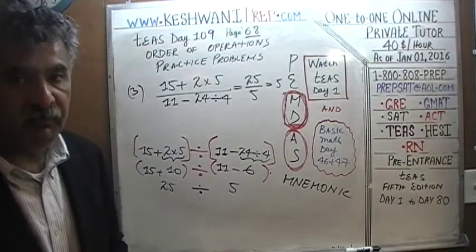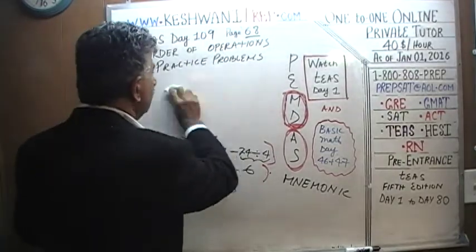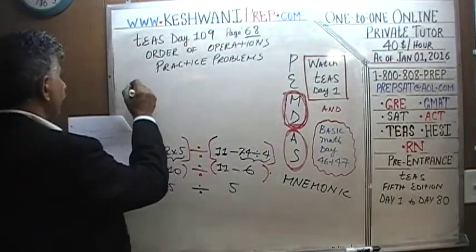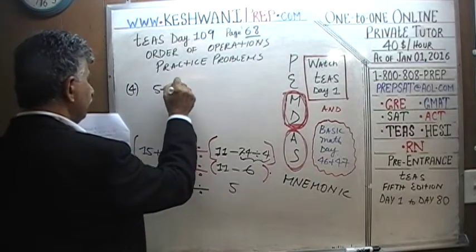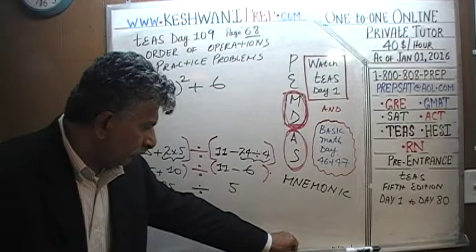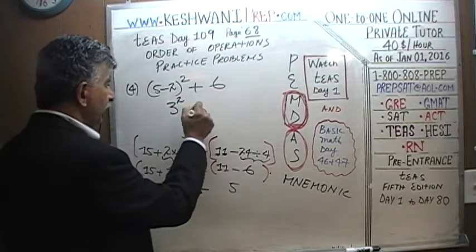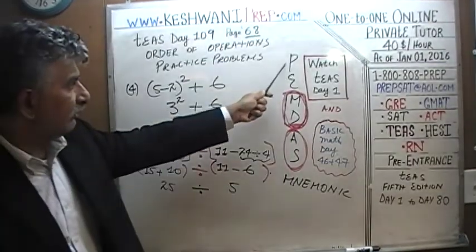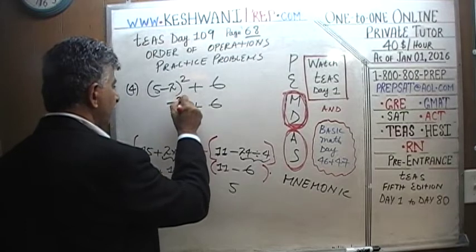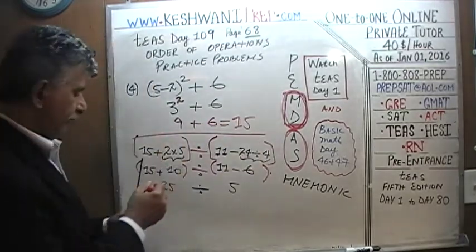We're going to look at 3 more bonus problems — numbers 4, 5, and 6 — which are not in the book. Number 4: (5 minus 2) squared plus 6. First, parentheses: 5 minus 2 is 3, so we have 3 squared plus 6. After parentheses comes exponents — 3 squared is 9. And then 9 plus 6 equals 15.